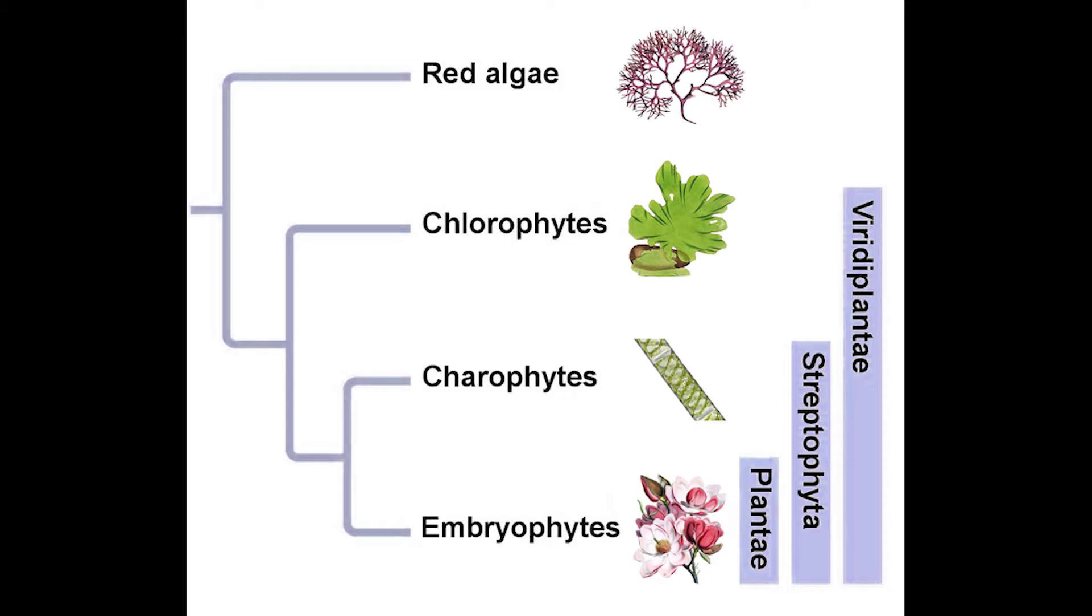The taxonomic supergroup Archieplacida contains the modern plants, the embryophytes, and their relatives, including the red algae, the chlorophytes, a group of green algae, and a second group of green algae known as the carophytes, indicated by the red box.